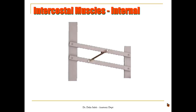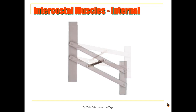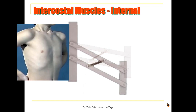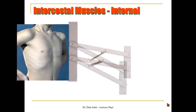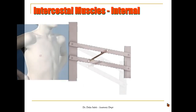Back to this simple model again. This is the direction of the internal intercostal muscle. It passes from the upper border of the rib below to the lower border of the rib above, in an opposite direction to the external intercostal muscle. So when these muscles contract they will depress the ribs downwards, decreasing the diameter of the thoracic cage and helping in expiration.